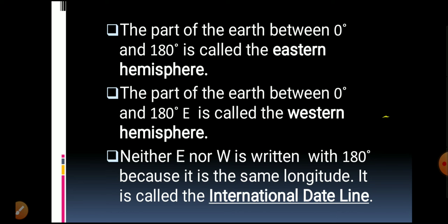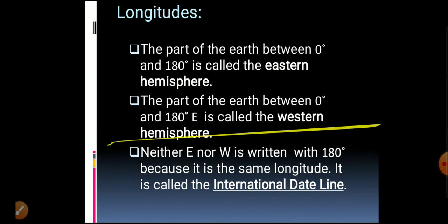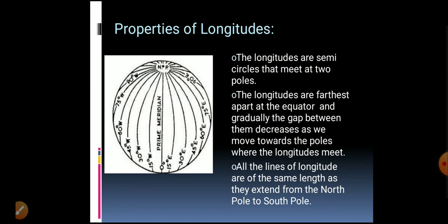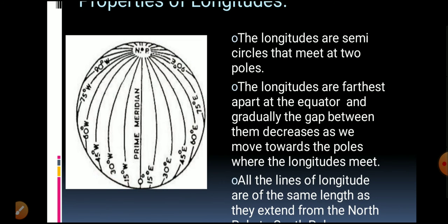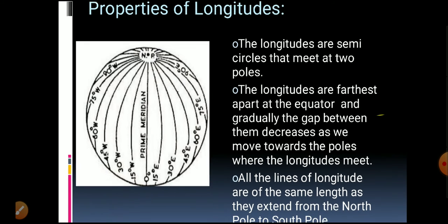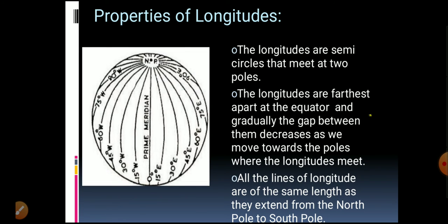Now let's look at the properties of longitude. As we can see in the image, the Prime Meridian is in the center with other meridians on either side. Longitudes are semicircles that meet at the two poles — at the North Pole and the South Pole.